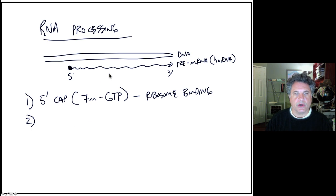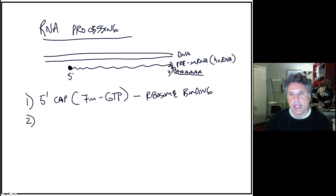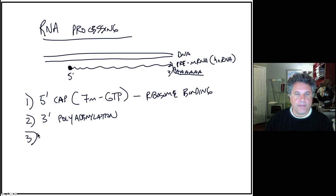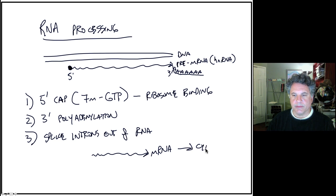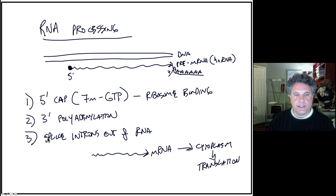The second RNA processing step is that polyadenylation will occur at the 3' end. Polyadenylase will post-transcriptionally modify the RNA by adding adenine-containing nucleotides to the 3' end — this is 3' polyadenylation. The third key step is that we must splice introns out of the RNA. When these steps are accomplished, we have a mature mRNA that can be exported to the cytoplasm and translated into protein.